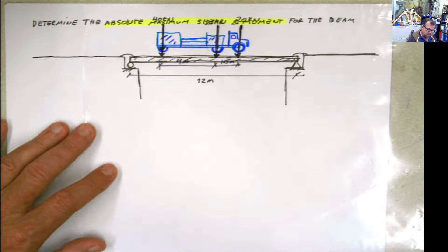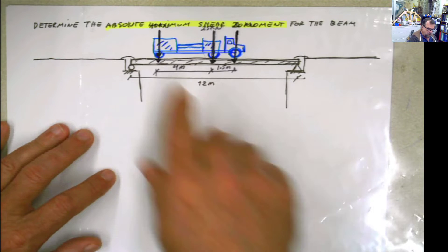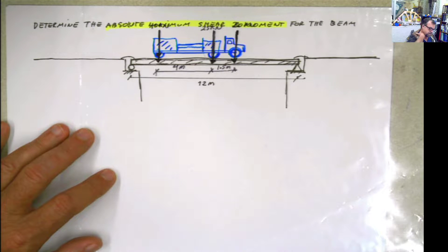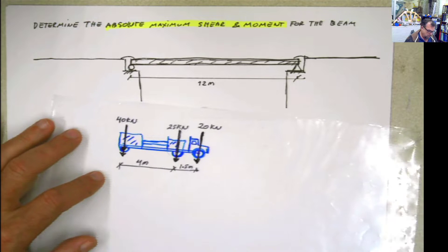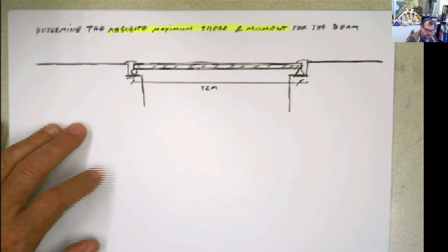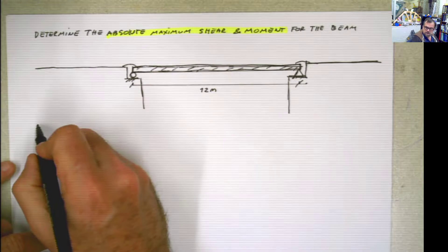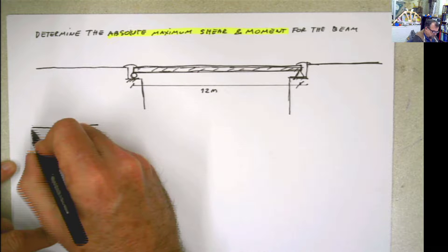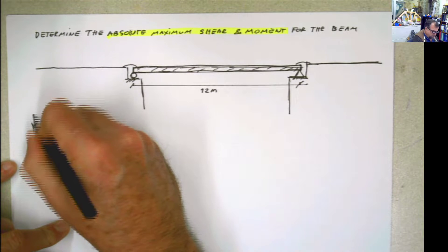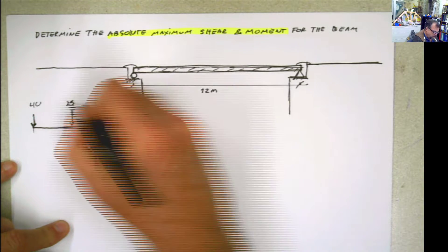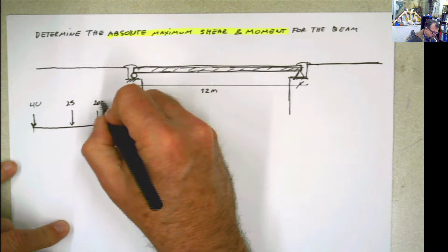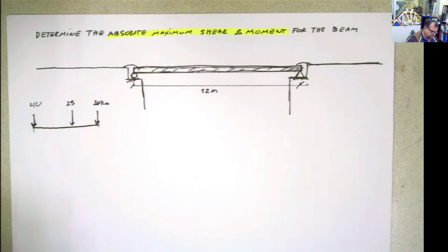In a previous video I demonstrated that when you have a moving load like that, where you should place it to get the maximum moment on the set of moving loads. The procedure is as follows. We have a load of 40, a load of 25 kilonewton, and a load of 20 kilonewton.